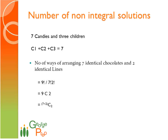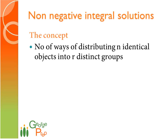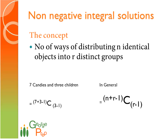What is this nine? Seven plus two — seven candies and two lines. What is this two? We have three children, so we had two lines. If we were to have five children, we would have put four lines. So the two is nothing but three minus one. So it is seven plus three minus one, C three minus one. In general, the formula is n plus r minus one, C r minus one. This is something that you will have to remember.